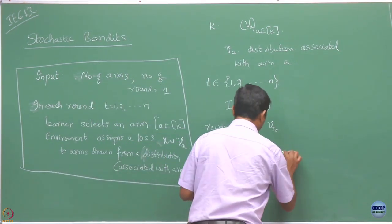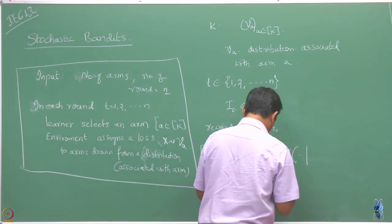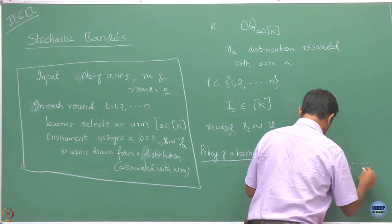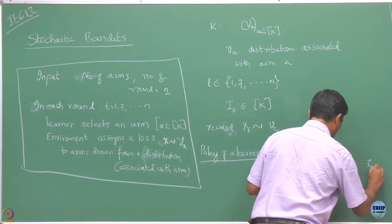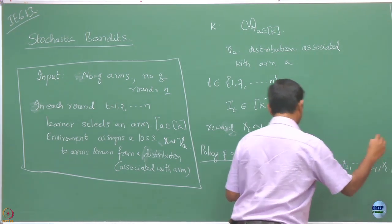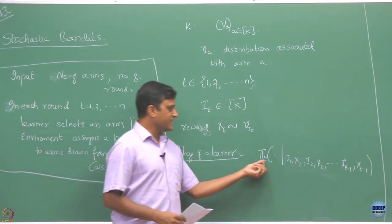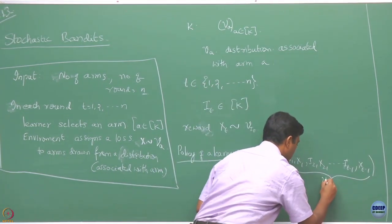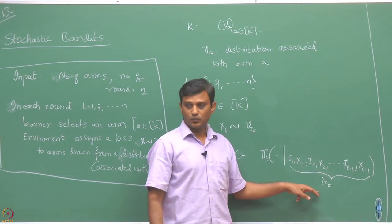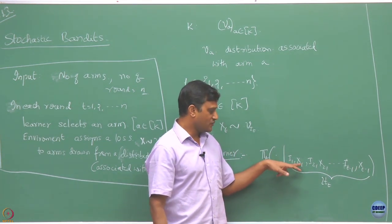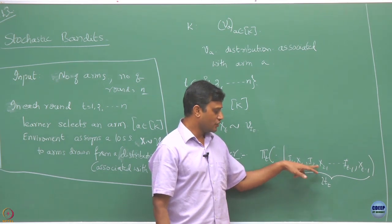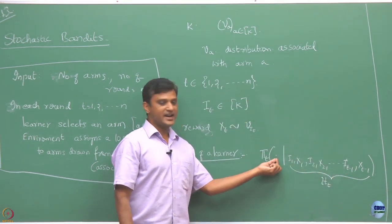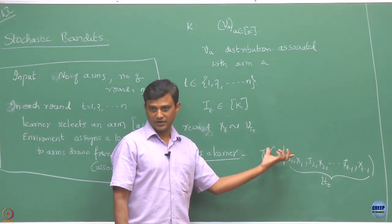The selection of action in each round we call the policy of the learner, and this policy will depend on what actions and corresponding rewards the learner has seen so far. I am going to denote it as pi_T. In round T, you would have observed all this history, which I denote as history up to time T: what I played in round 1, what reward I observed, what I played in round 2, what reward was observed — all the way till round T minus 1. Based on that, the learner decides what action to play in the next round.